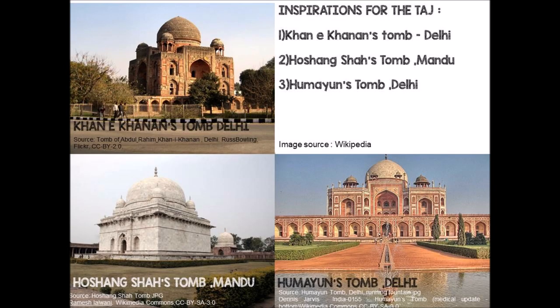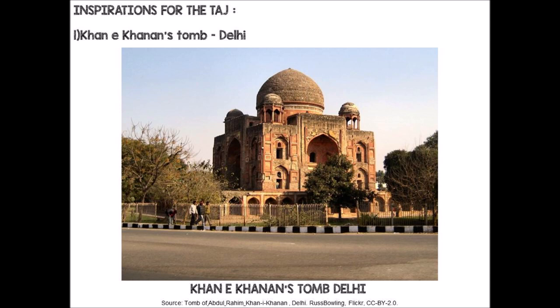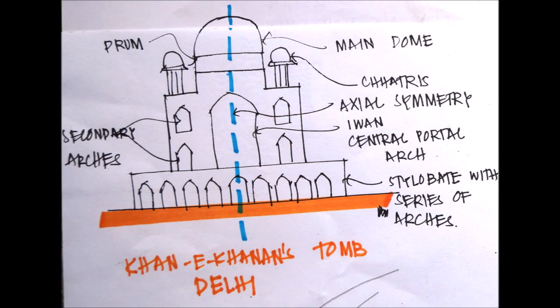Here in this slide, you can see all three inspirations — the Khan-i-Khanan tomb, the Hushan Shah tomb, and Humayun's tomb. The Khan-i-Khanan tomb very closely resembles the Taj Mahal. The tomb is elevated on a plinth; the plinth consists of a series of arches. Then you have the iwan — the central portal arch — and above the iwan we find the main dome. The main dome is elevated by a drum, and on all four sides of the main dome we find dome canopies, also called chhatris. The composition is symmetrical.